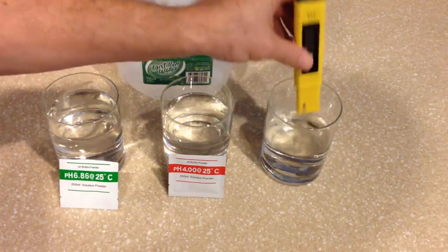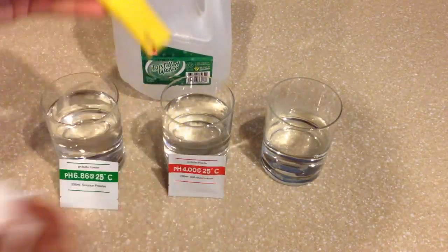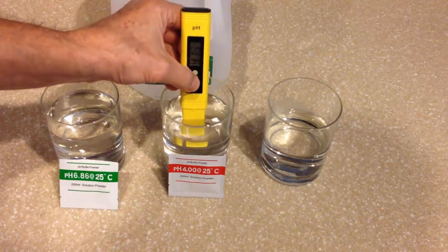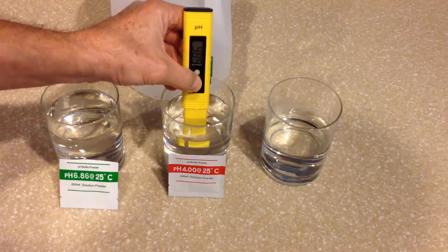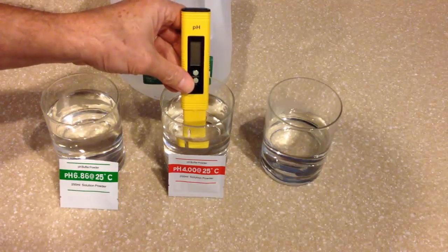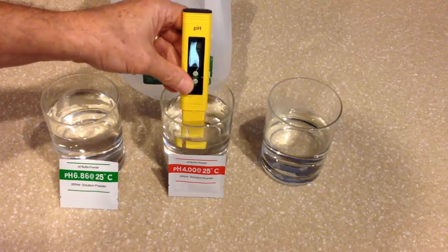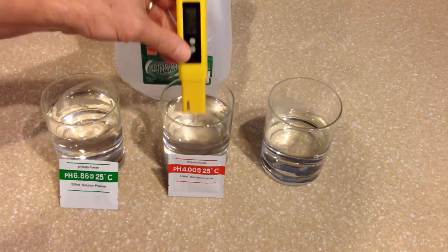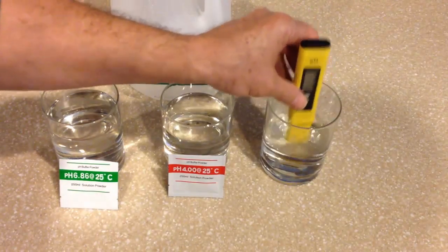I'm going to rinse it off in the distilled water, dry it off a little bit, then simply put it back into the 4.0 solution. Again, I'm going to press the calibration button for three seconds, release, and then press it one more time and it'll start to flash at 4.0. When it stops flashing, it'll be completely calibrated, and there it stopped at 3.99, as you can probably see. I'm simply going to rinse it off, and it's completely done.